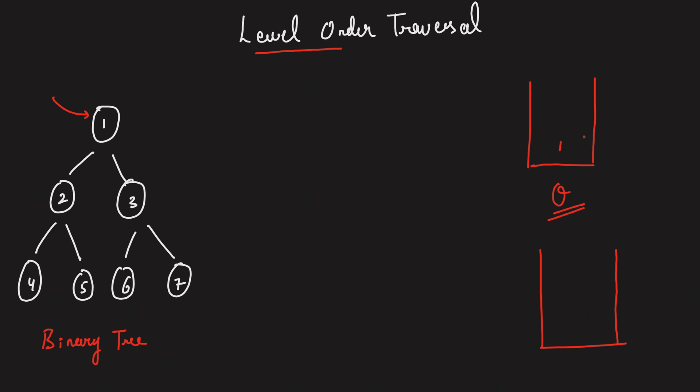So what's the first thing that I have? I have a node which is 1. So let's take this 1 out. Now whenever you take this 1 out, please make sure that if on the left of this 1 — that's 2 — if it exists, if the left exists, just take this left guy and put it into your queue data structure.